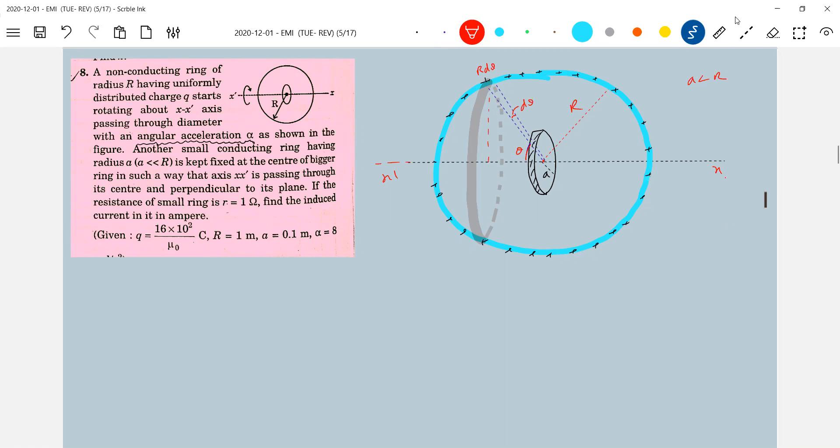If you want you can write it y. Now this is a non-conducting charged ring, so it will produce a magnetic field at this particular point.